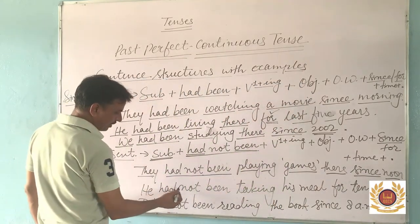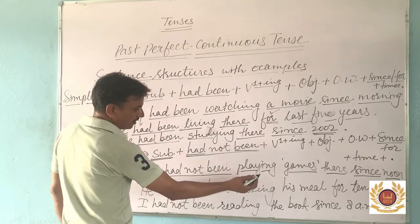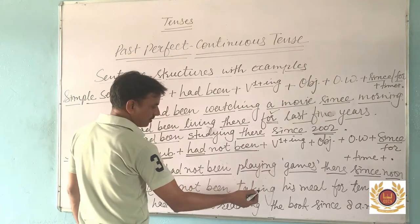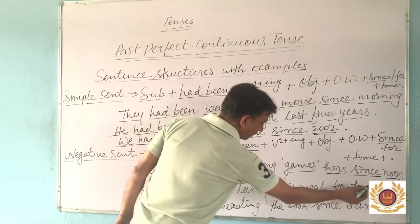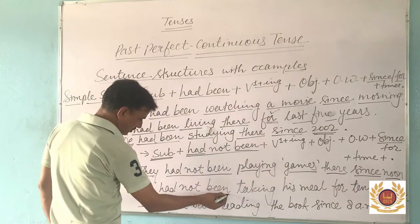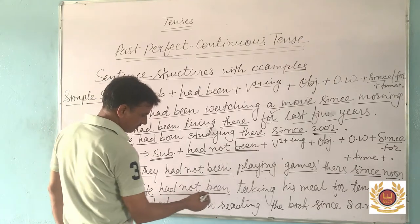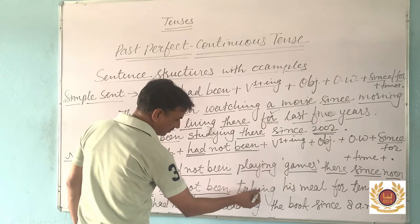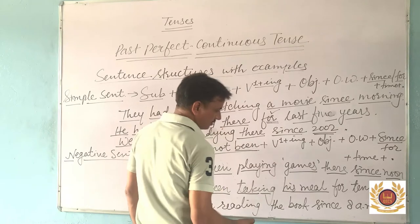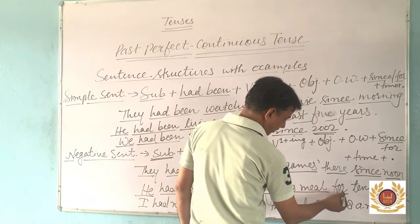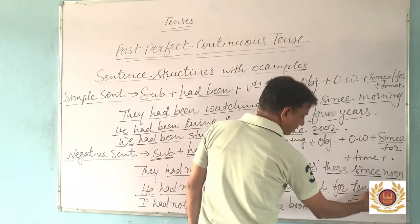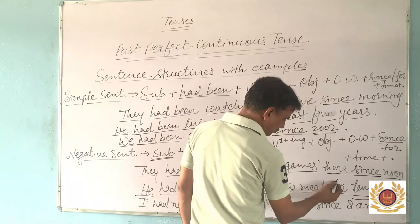Next negative example: 'He had not been talking for 10 minutes.' In this sentence, the action of talking was not going on within a period of time. 'He' is the subject, 'had not been' is used here, 'talking' is the first form of verb with '-ing', 'it' is the object, 'for' is the adverb — because the timing is a period. '10 minutes' shows a period, so 'for' is used here.